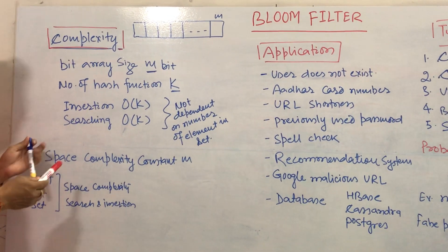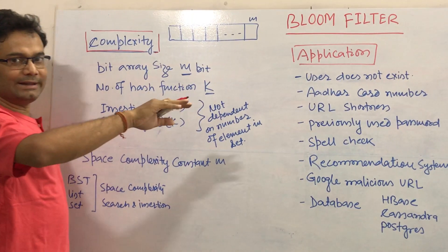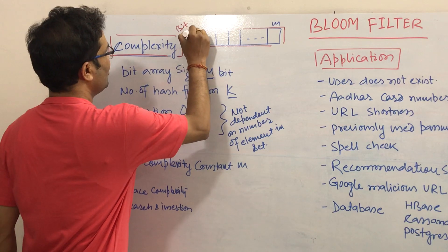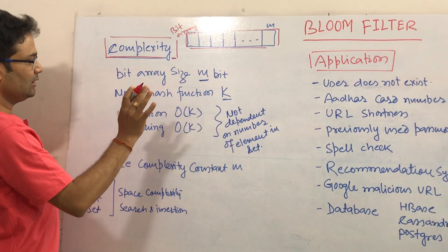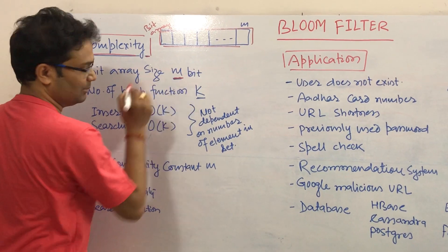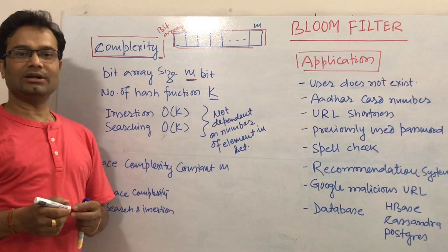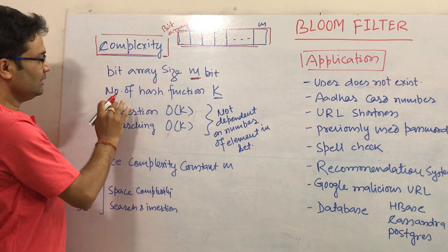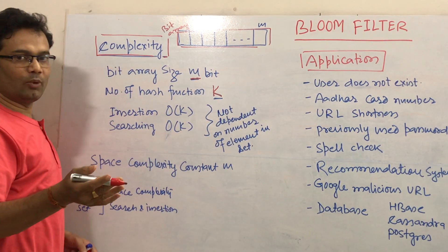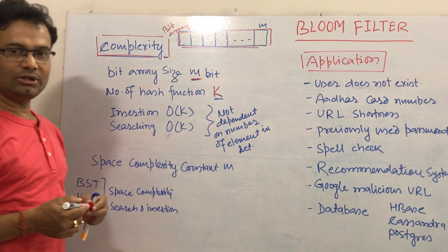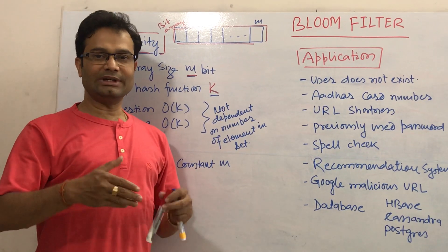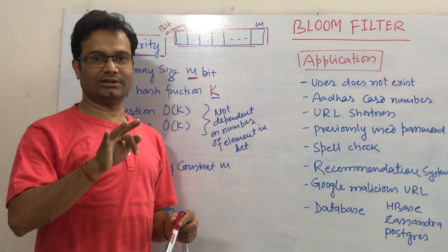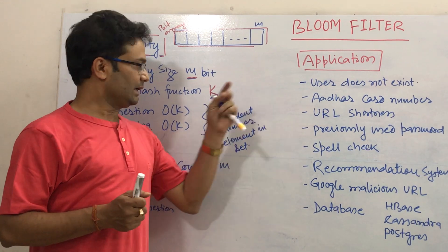Let us start from the complexity part — it is very interesting. As I have already explained in the previous video, to implement the Bloom filter, we take one bit array of size M. So that is the space complexity — it will always be M bits, irrespective of any number of input elements added. Your bit array will always be M, that is constant. And the number of hash functions is K. In the second video, I explained that when we implement the Bloom filter, we take multiple hash functions. In the previous video, we took three hash methods, so K equals 3.